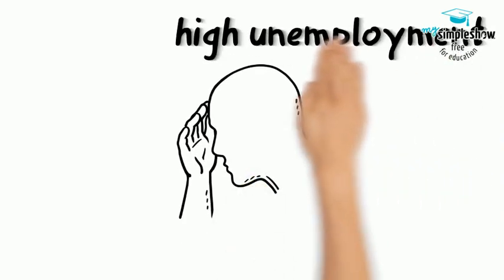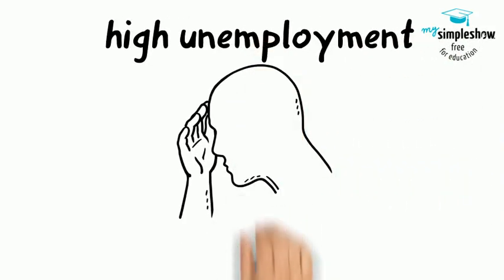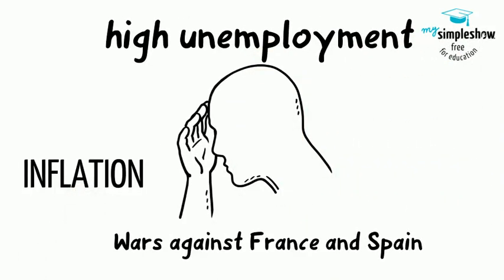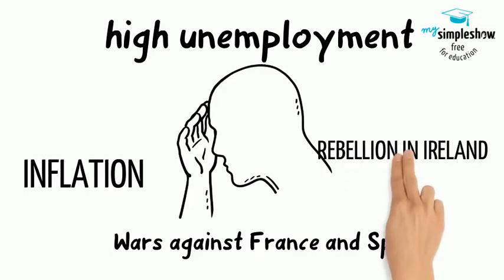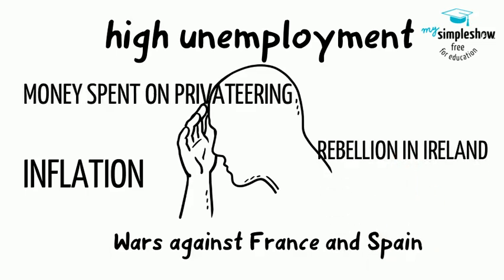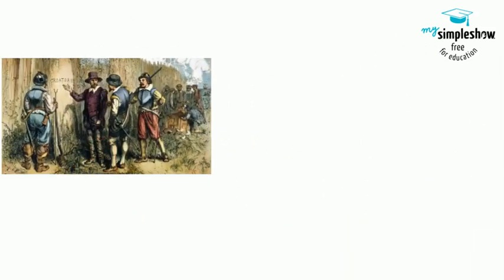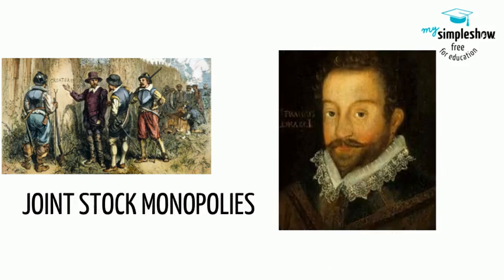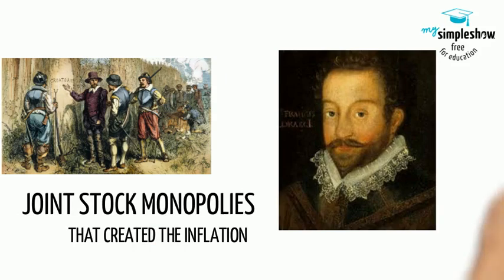Because of Elizabeth's policies, England was facing inflation, high unemployment, and costly wars against France, Spain, and Ireland, with no functional colonies to balance out the costs with mercantile. Sir Walter Raleigh's Virginia colonies were not panning out. Her policies also created joint-stock monopolies and piracy, which were raising prices.